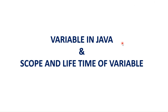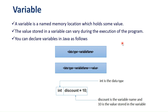Hi everyone, in today's class I will explain the variable concept in Java, and also I will tell you what is scope and lifetime of a variable. A variable is a named memory location which holds some value. The value stored in a variable can vary during the execution of the program. Without a variable we can't retrieve the data from the memory location, that is the reason it is called a named memory location.